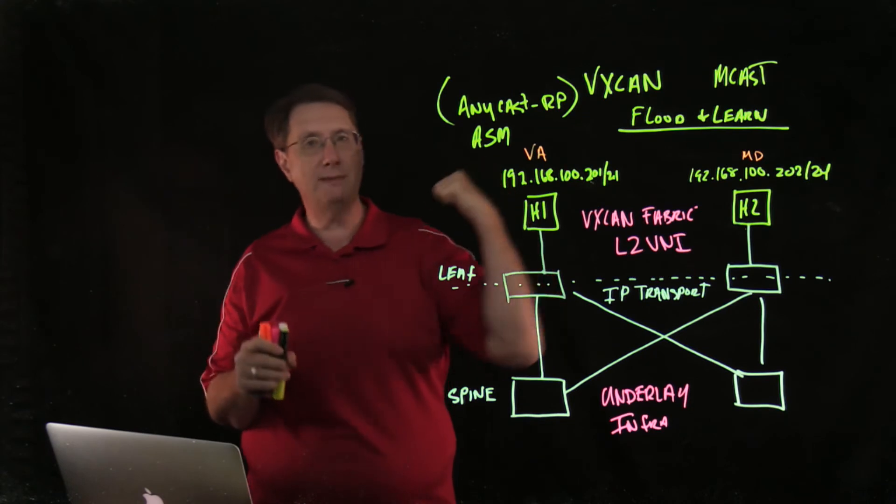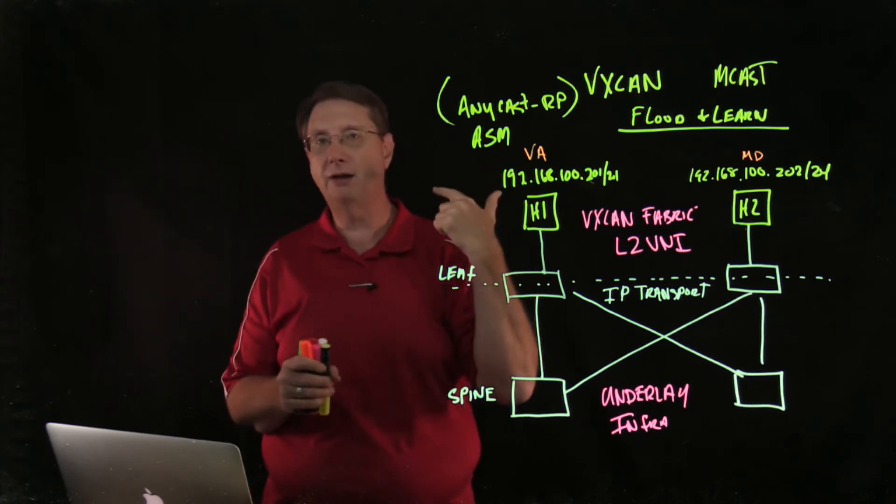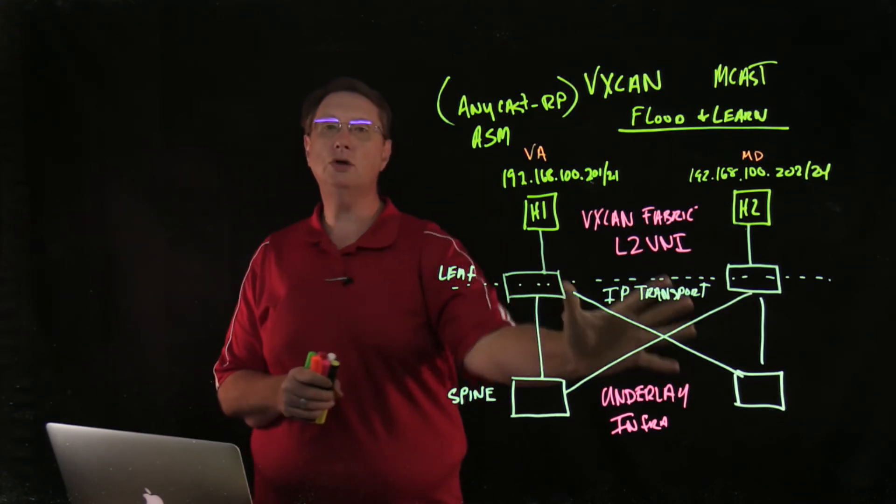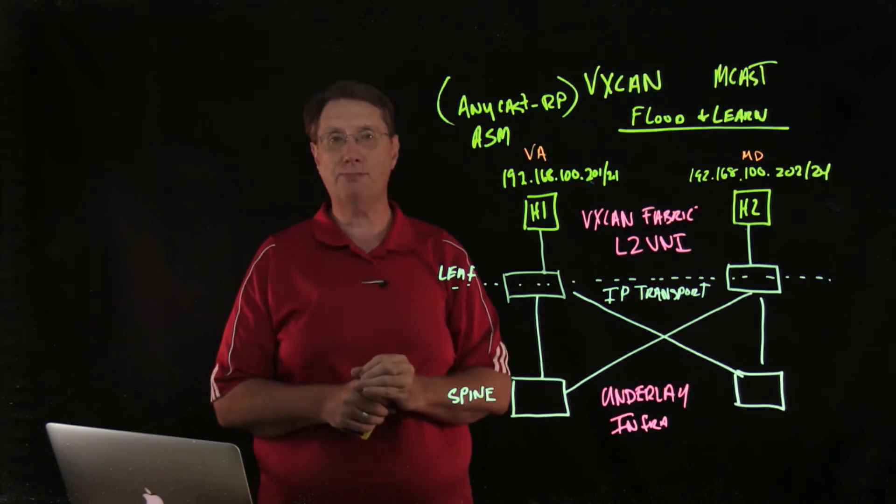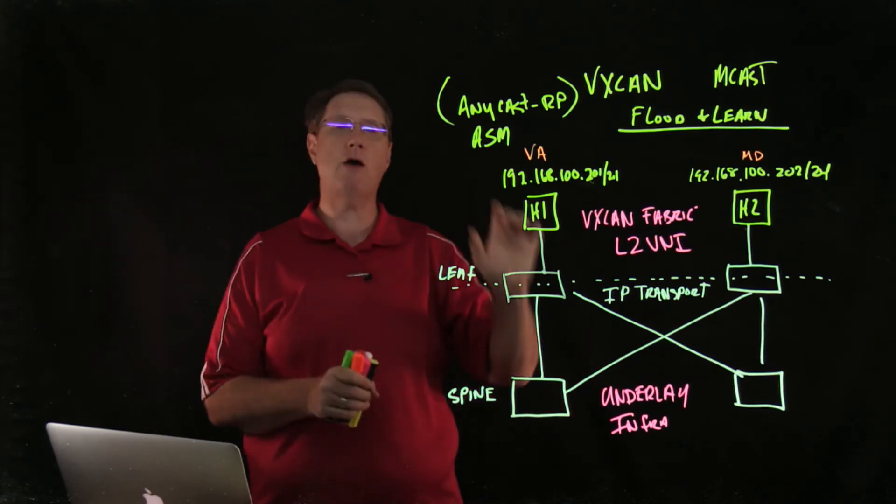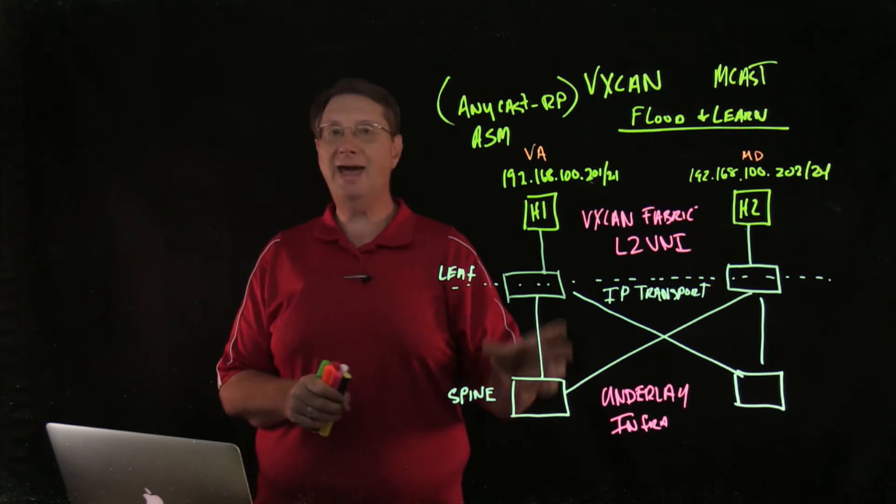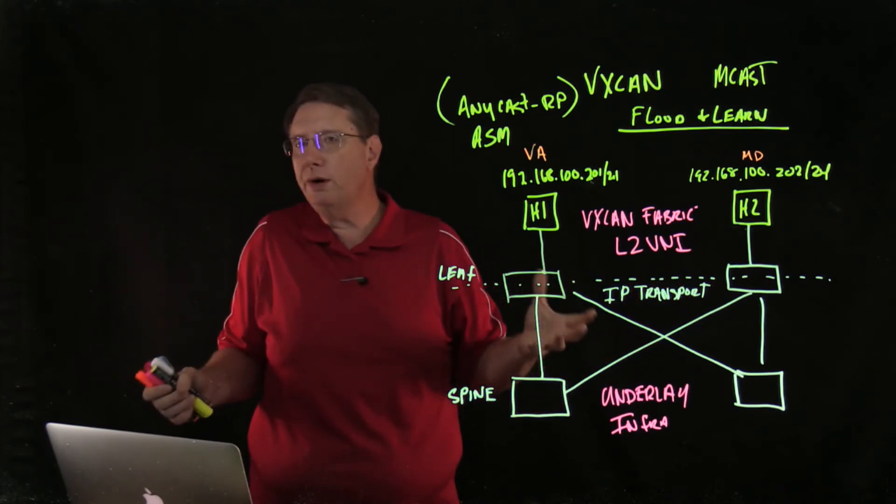Those overlays, whether we're talking about OTV or VXLAN, are going to run on top of this IP transport. This IP transport, depending on our deployment mechanism, may need to support multicast or not. But at the end of the day, it still has to be a layer 3 transport.